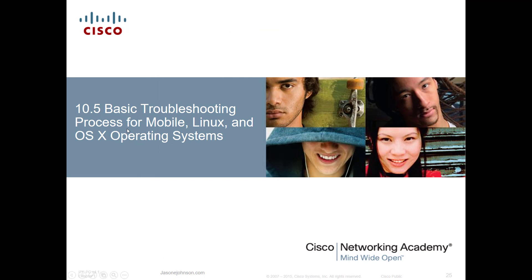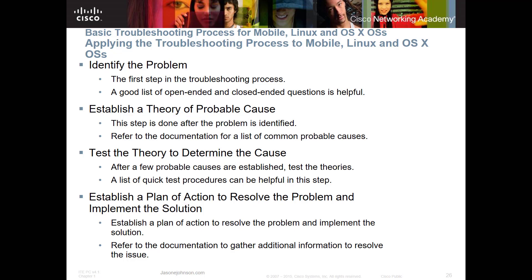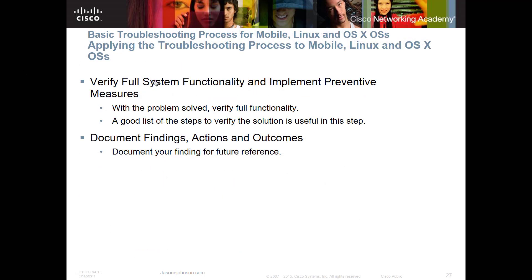Let's look at the basic troubleshooting process for mobile, Linux, and OS X operating systems. These are very similar to what we've covered in class. You want to identify the problem, ask open-ended questions, establish your theory of probable cause, and test that theory. Then establish your plan of action, resolve the problem, implement the solution, verify that the system is fully functional, implement preventative measures, and document, document, document all your findings.